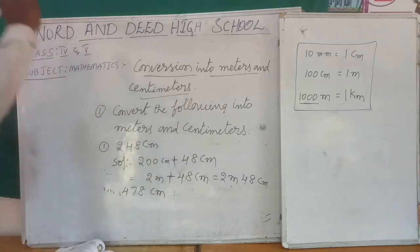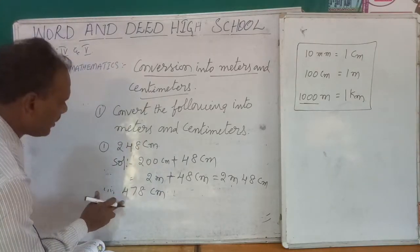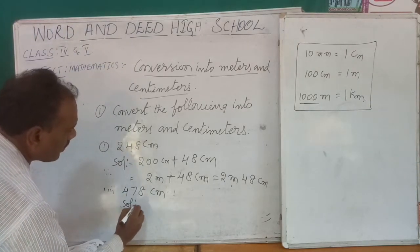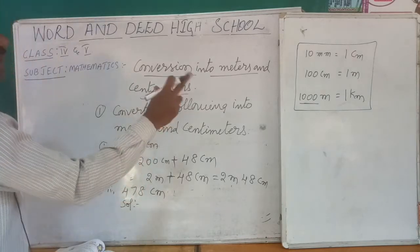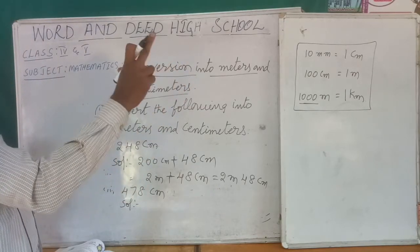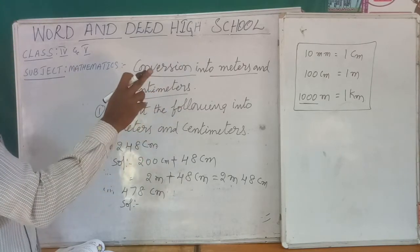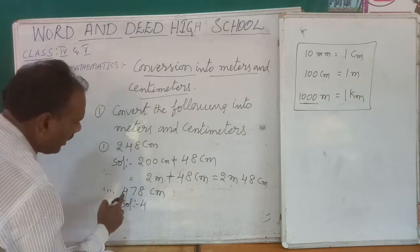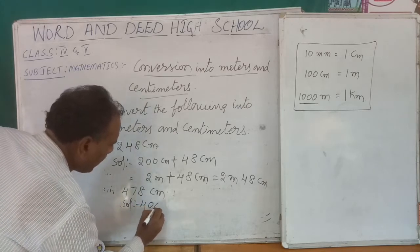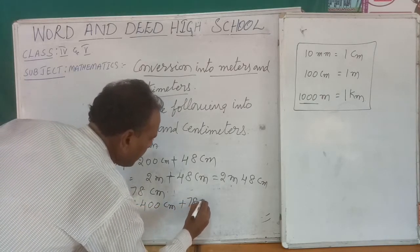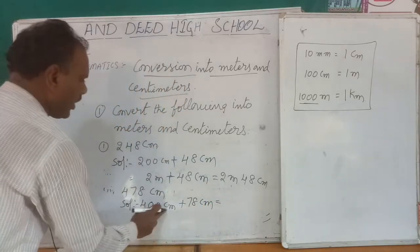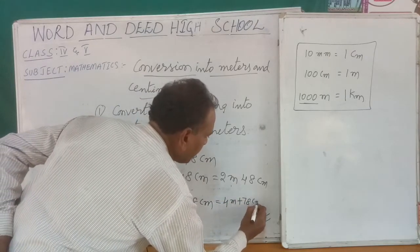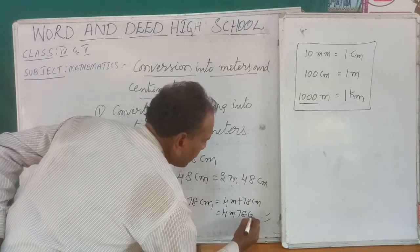Point 2: 478 centimeters converting into meters. Since 1 meter = 100 centimeters: 478 = 400 + 78 centimeters. 400 centimeters equals 4 meters, so the answer is 4 meters 78 centimeters.